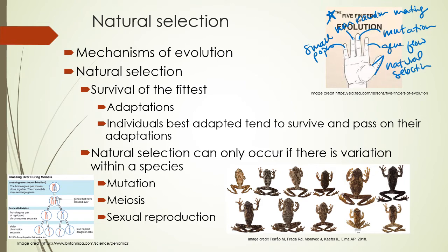Natural selection is survival of the fittest based on adaptations — traits that allow individuals to survive in their environment and pass those traits on to their offspring. Those offspring will also survive and have babies that carry those adaptations. Natural selection can only occur if there is variation within the species. If everything is a clone of everything else, then either everything survives or everything dies. Here we have some variation in a frog species, which allows some individuals to be better suited to their environment and some less suited, enabling natural selection to occur.